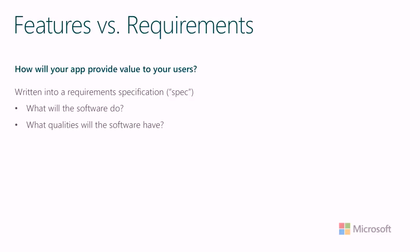In software companies, we typically define these requirements in a document referred to as a spec — a requirement specification. There are two broad categories of user requirements. On one end: what does the user need the app to do for them — what the software will do — referred to as functional requirements because it's functionality-based. And then there's the softer side: how much do they care about how fast it is, or how accessible the app is — those are non-functional requirements that focus on the qualities of the software. For now we're going to talk more about functional requirements and figuring out the functionality of the app.